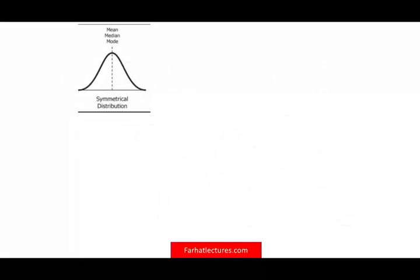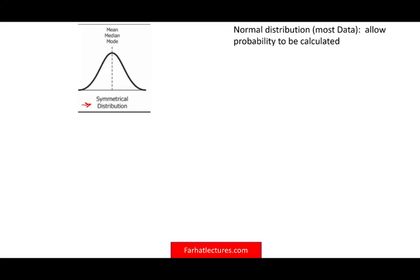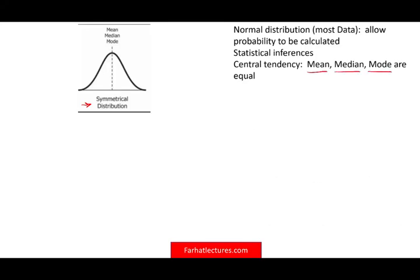In the prior session, we looked at the normal distribution, and it's very important that you are familiar with the normal distribution or symmetrical distribution before we look at this session. A normal distribution tells us a lot about central tendency — the mean, median, and mode are equal, and it is symmetrical, meaning 50% of the distribution lies on either side of the graph. We can use standard deviation as a measure of variation.